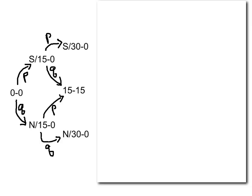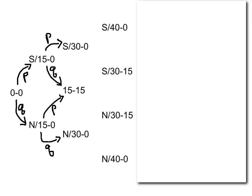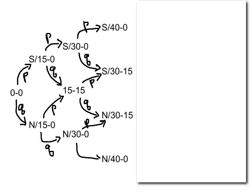After another point is played, we reach more possible scores. If the server is up 30-0 and wins, it goes to 40-0; if the server loses, it goes to 30-15. From 15-all, the server winning gives server 30-15, and the non-server winning gives non-server 30-15. From non-server up 30-0, it either goes to non-server up 30-15 or non-server up 40-0.